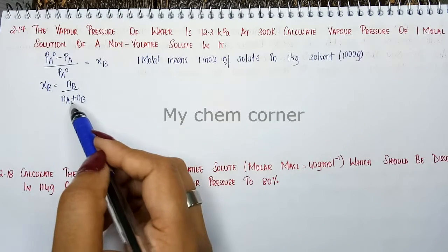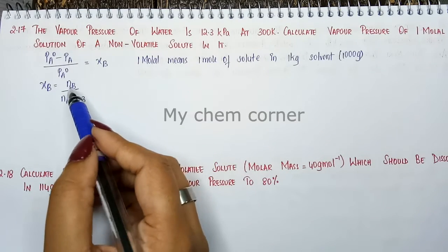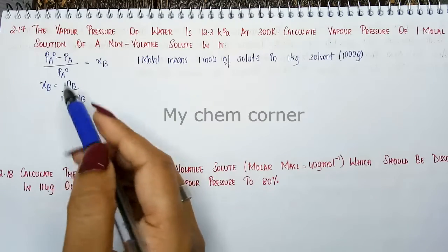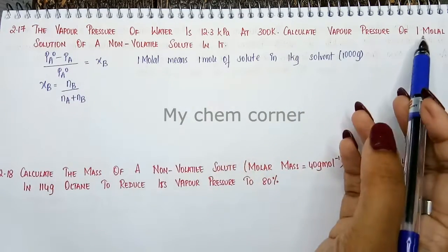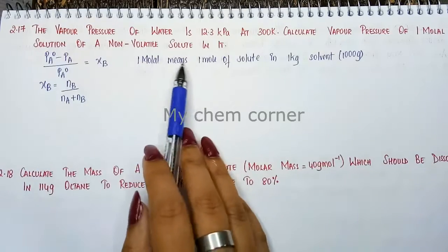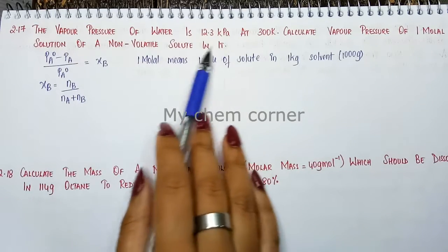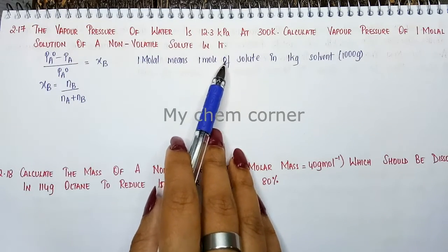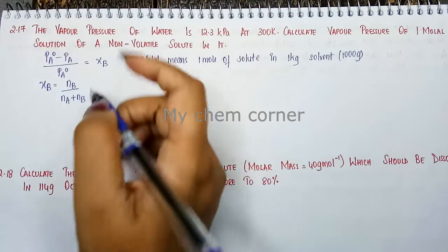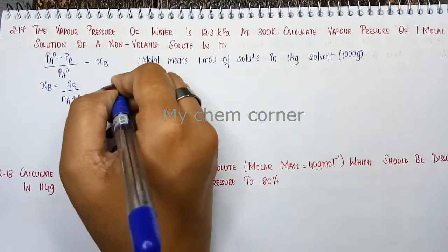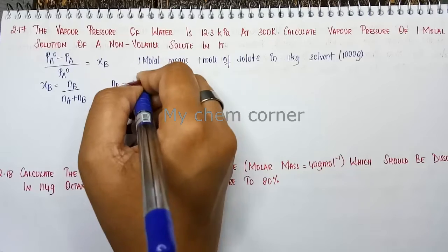When you say that N_B is the solute and N_A is going to be the solvent, here it says one molal solution, meaning one mol of solute. So when it says one mol of solute, in this case, your value for N_B is given to you directly: one mol.